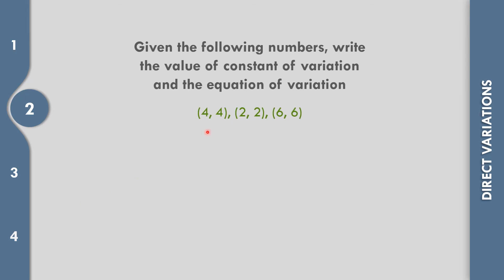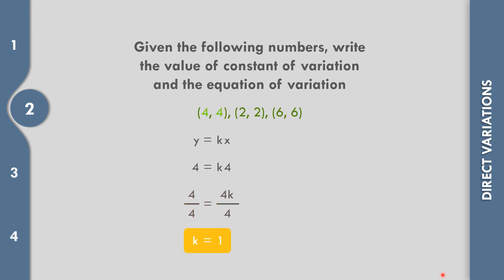How about number 2? The values are 4, 4, 2, 2, 6, 6. The equation y equals kx. So the value of y is 4, equals k times the value of x, which is 4. Divide both sides with the numerical coefficient of k, that is 4. So 4 divided by 4 equals 1, so k equals 1. The constant of variation is 1. The equation of variation: replacing k by 1, that becomes 1x, so y equals x.